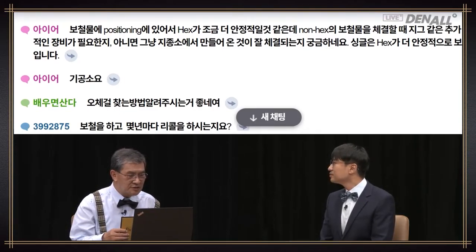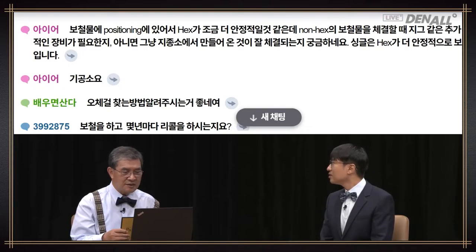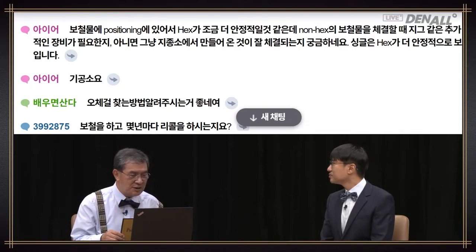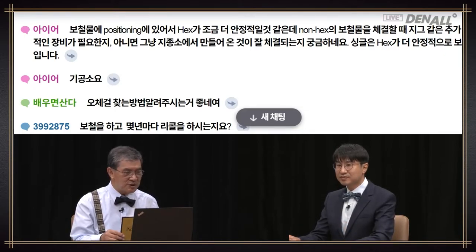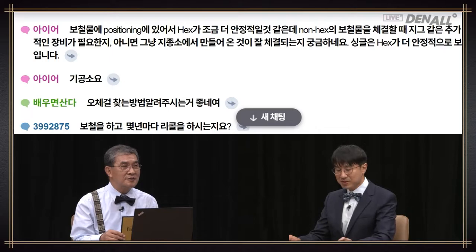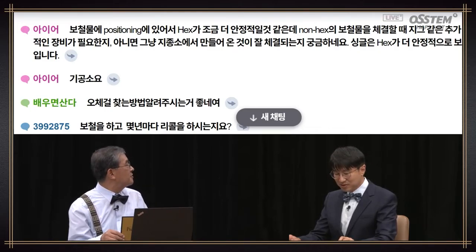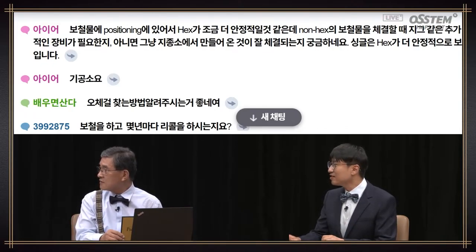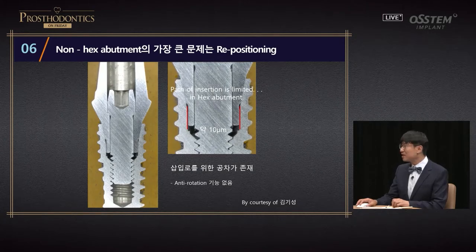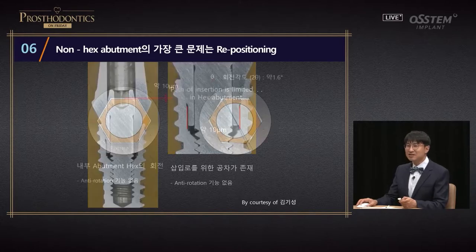In terms of prosthesis positioning, hex abutment will be more stable. When you connect the non-hex prosthesis, do you need additional appliances like a jig, or do you just use what's been delivered by the lab? For single restoration, hex looks more stable. So for non-hex, you need a jig — definitely, especially in the case of single restoration. The biggest downside of non-hex abutment is repositioning. There is a 10 micrometer gap for hex type as well, and theoretically it can rotate up to 1.6 degrees.